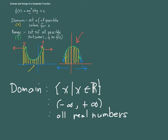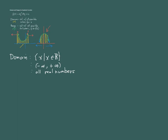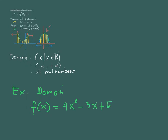The domain will remain the same for all quadratic functions — it's the set of all real numbers. So the next time you're asked to find the domain, if you're given f of x equals 4x squared minus 3x plus 5, the moment you identify it as a quadratic function, the domain is simply the set of real numbers, because every number can be used for x.